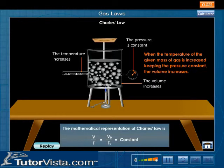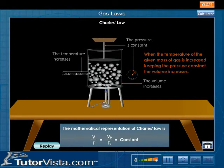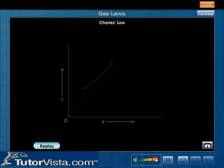The mathematical representation of Charles' law is V by T is equal to V0 by T0 is equal to a constant. The graph between V and T at constant pressure is a straight line and must ideally pass through the origin. But the experimental graph shows a variation.